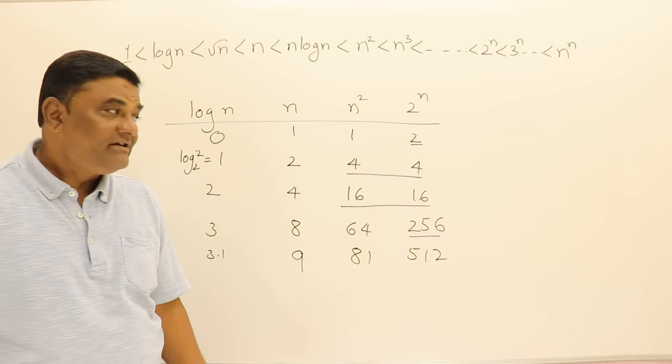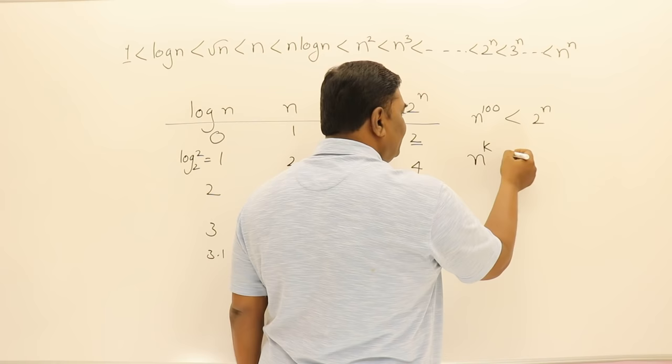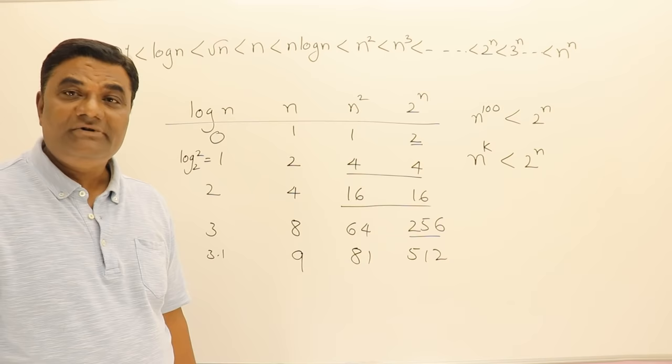So even if you have n power 100, that is also less than 2 power n. You write anything n power k, k can be anything the value that you can imagine, and that's going to be less than 2 power n. How come?